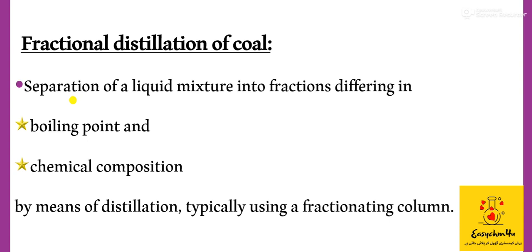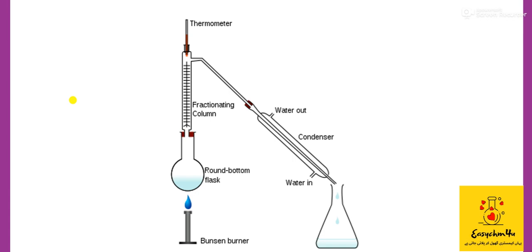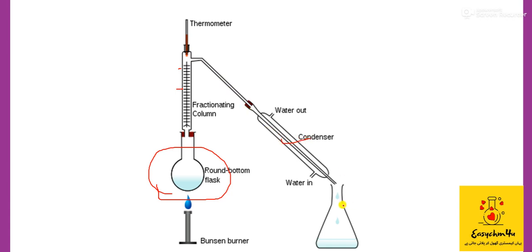For the fractional distillation of coal tar, a fractionating column is used at the industrial level. For understanding fractional distillation: if we have two liquids of different boiling points and we heat them, the liquid with the lower boiling point will vaporize first when the thermometer reaches its temperature, then with condensation it will cool down and convert back into liquid. Then heating continues until the second liquid reaches its boiling point, converts into vapors, and with condensation we collect it in a second flask.